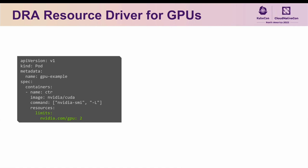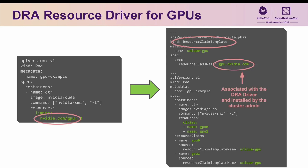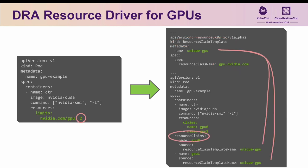Starting from the example we used previously of requesting access to two GPUs, the equivalent request under DRA would look like this — where instead of requesting two GPUs from an extended resource called nvidia.com/gpu, you instead create a resource claim template object pointing to the gpu.nvidia.com resource class. You then reference that template twice inside a new resource claims section of the pod spec, give each reference a local name — in this case gpu0 and gpu1 — and then reference those claims from within a new resources.claims section of the container spec. Since this is a template, each reference will trigger a unique claim to be created under the hood, resulting in each reference pointing to a unique GPU.